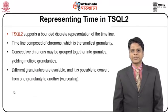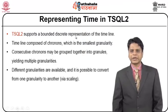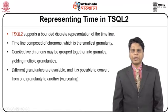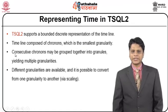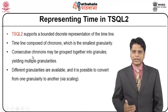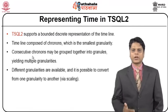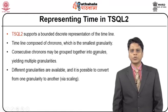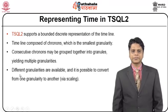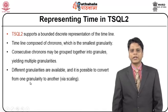Let us try understanding how to represent time in T-SQL, that is temporal SQL. T-SQL supports a bounded discrete representation of the timeline. The timeline is composed of chronons, which is the smallest granularity. Consecutive chronons — every fact happening consistently — may be grouped together into granules, yielding multiple granularities. Different granularities are available and it is possible to convert one granularity to another by way of scaling.